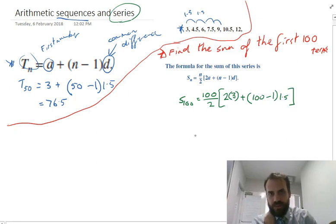We can type that all into our calculator in one shot if we're careful. If we add the first 100 terms together, we get 7,725.